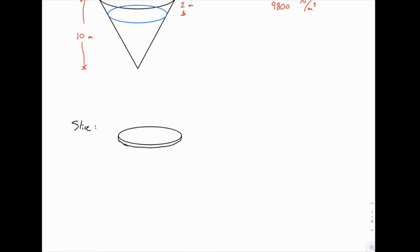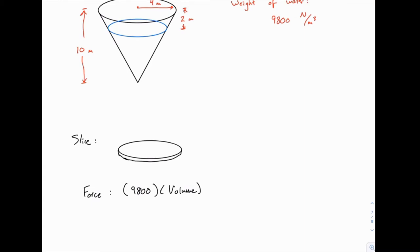We've picked out a slice. We're going to find the force or the weight of that one slice, which will be 9800 times the volume. The 9800 is the unit weight of water, and if we find the volume in cubic meters, that will cancel and we'll be left with newtons of force. So it's really a matter of finding the volume of a given slice.